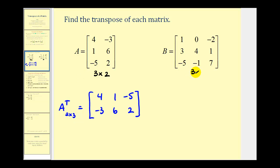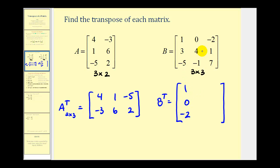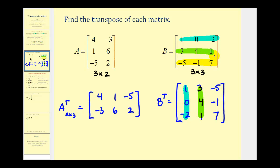Notice matrix B is a three by three matrix, so the transpose of matrix B will also be a three by three matrix. Again, we take the elements in the rows and make them the columns of the transposed matrix. Row one has elements one, zero, negative two, which means column one in the transposed matrix will have elements one, zero, negative two. Row two has elements three, four, negative one — this forms column two. Row three forms column three: negative five, negative one, and positive seven. To emphasize: row one became column one, row two became column two, and row three became column three — and the same applies to the first example.